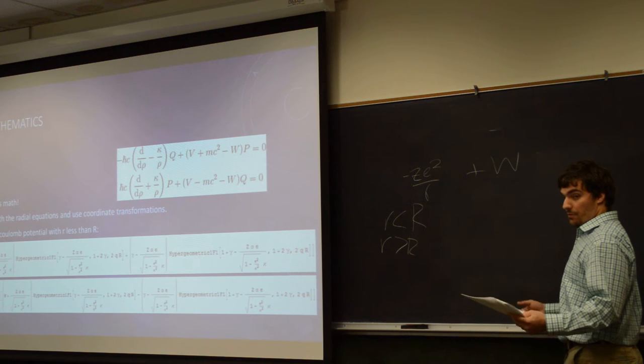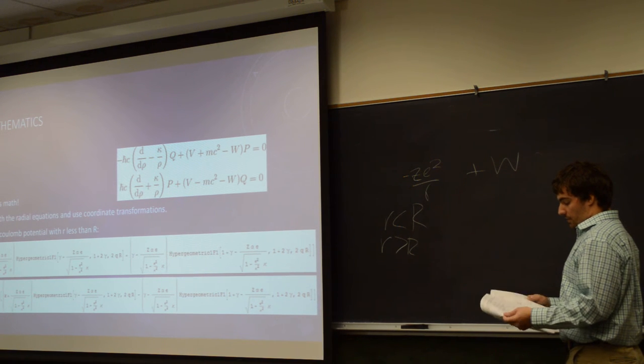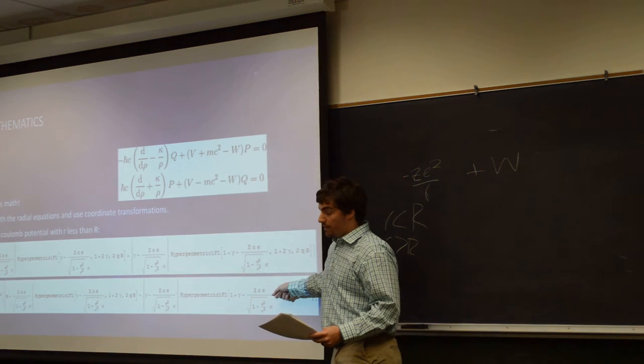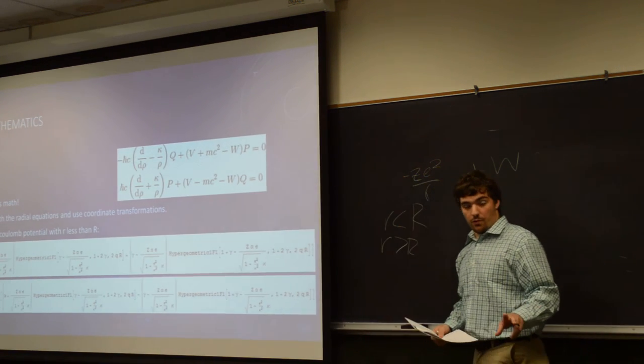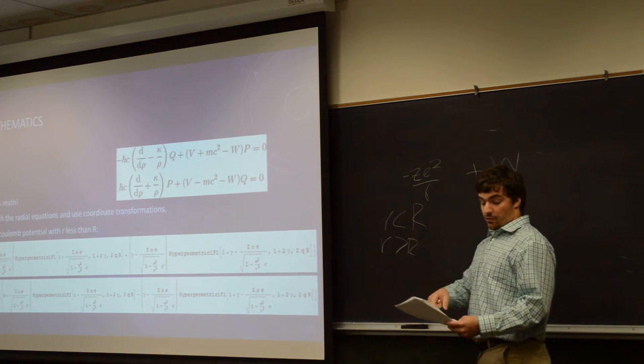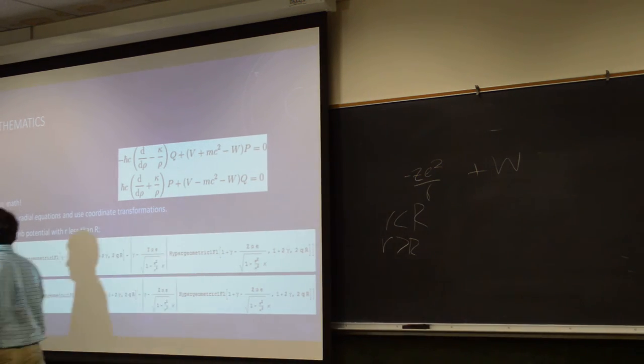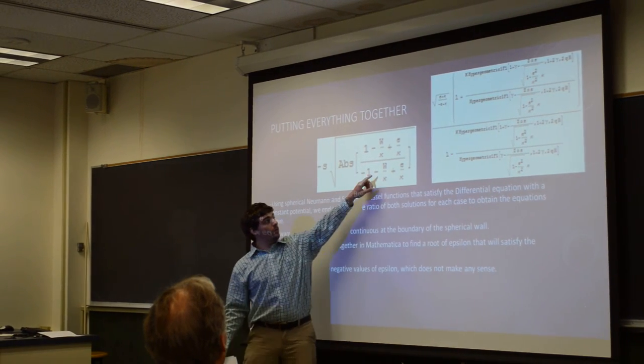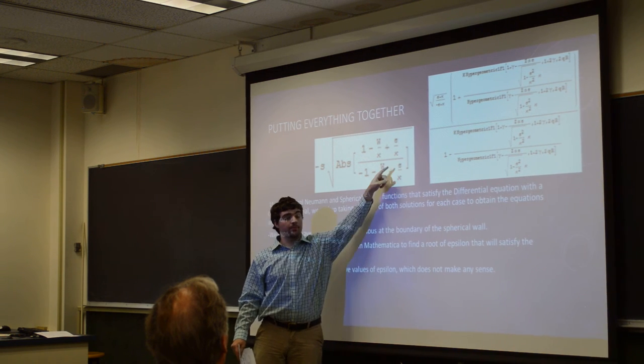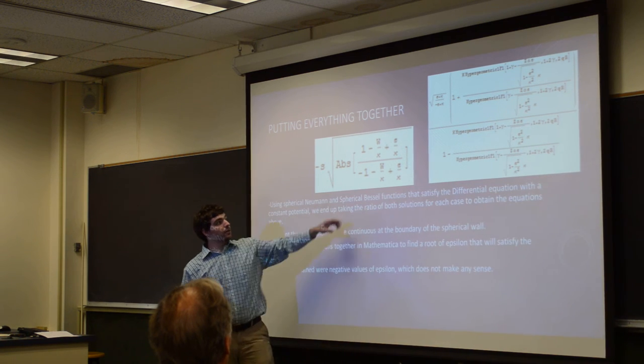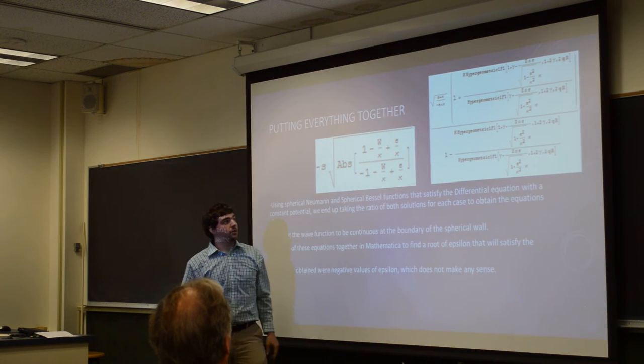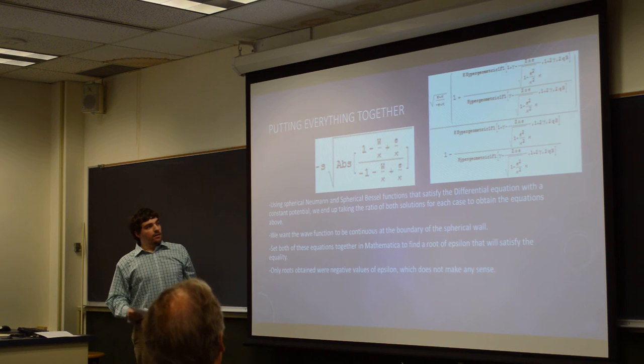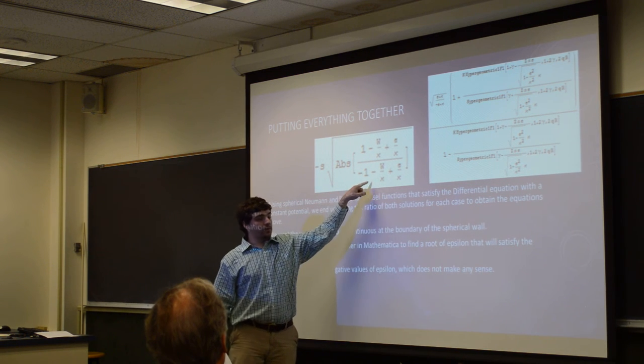You end up getting addition of spherical Bessel functions and spherical Neumann functions. After going through everything, you take a ratio of these two equations together, then you take the two solutions for little r greater than R and take the ratio of those two solutions as well, and you end up getting this mess right here. This W, we have these parameters W over kappa and epsilon over kappa. Epsilon is our energy value, kappa is mc squared, W is our constant potential. You can basically vary these things and play around with them in Mathematica to see what you come up with.